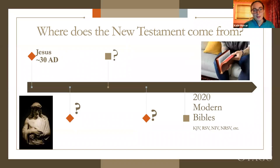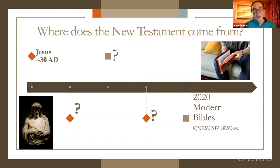For most people, we know that Jesus lived and was crucified around 30 AD, and that's roughly the beginning of Christianity as it took off. We might be able to plot some points on that timeline, but things get really fuzzy when we actually talk about the New Testament. How do we get from Jesus to our modern Bibles? Hopefully today we'll be filling in some of those points on the timeline.